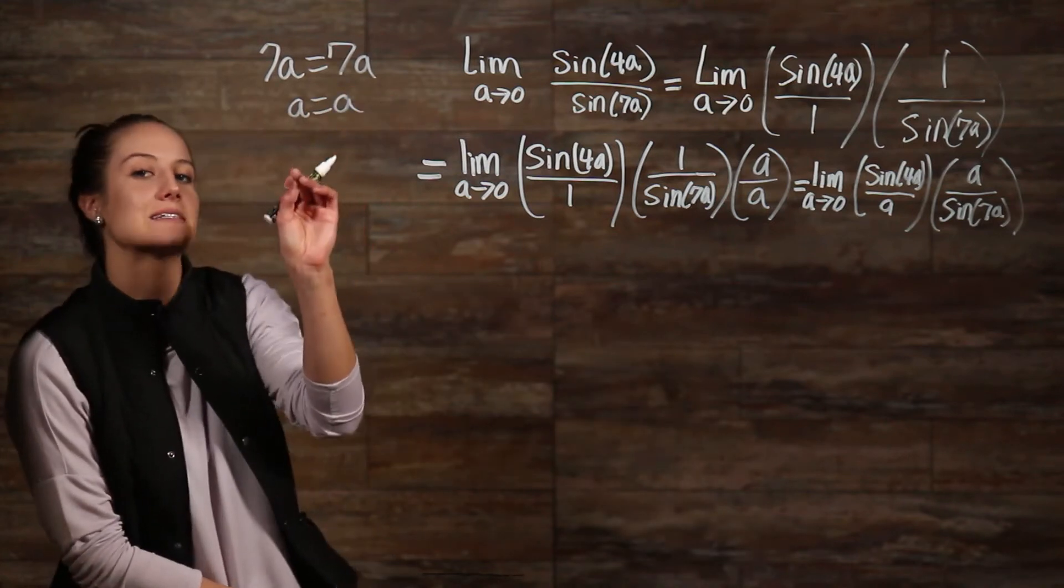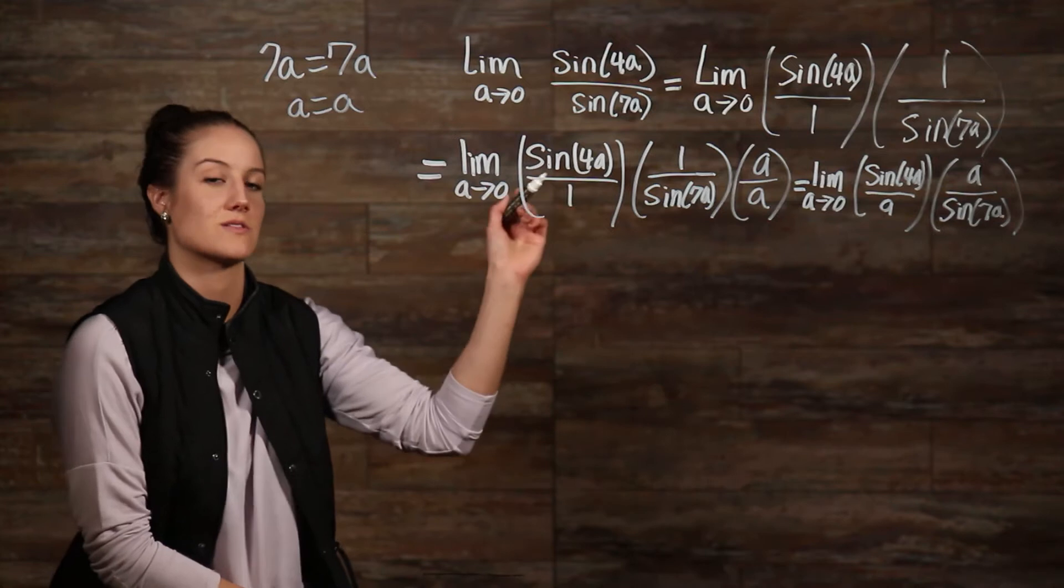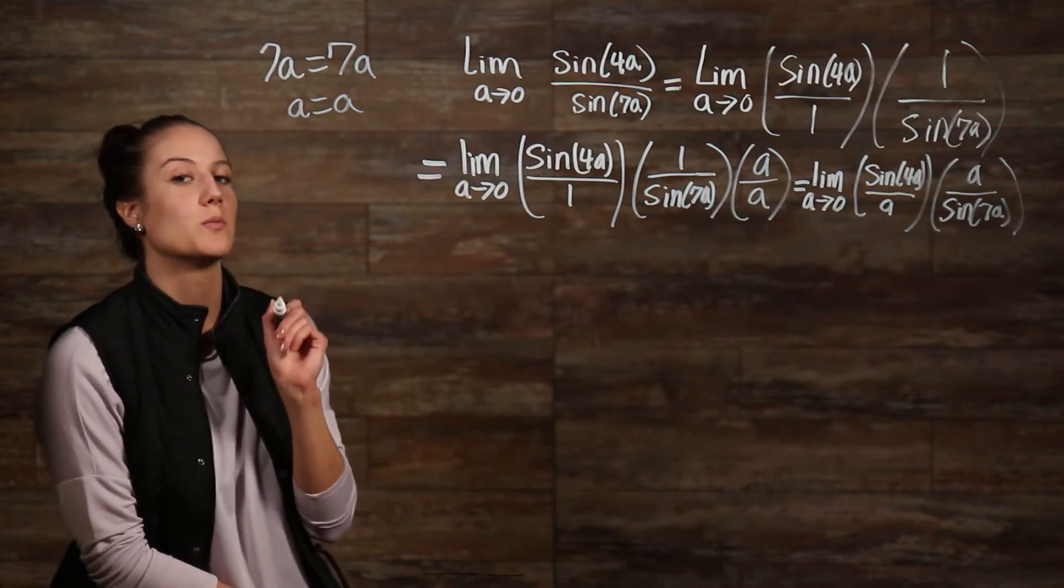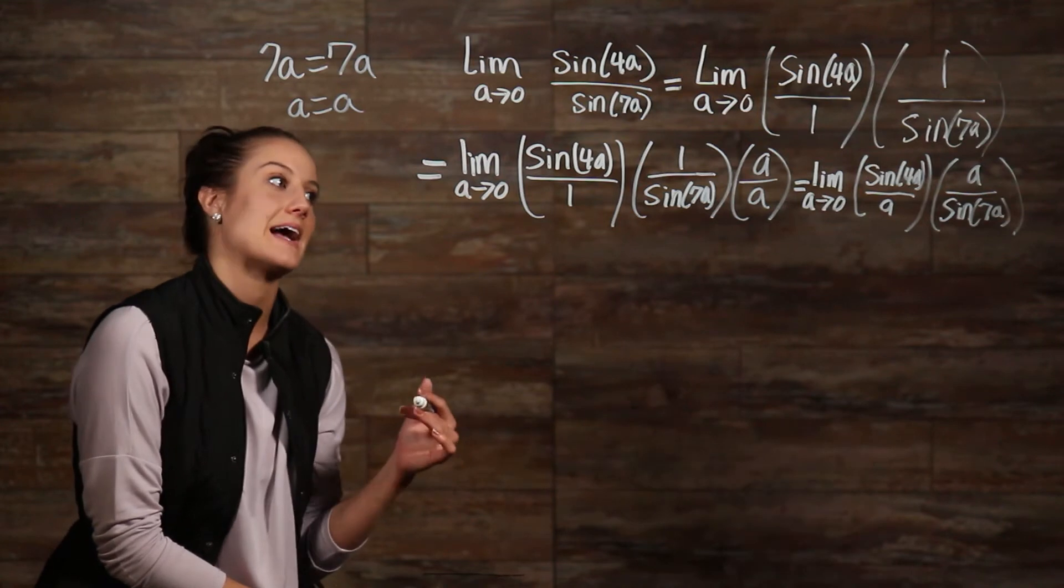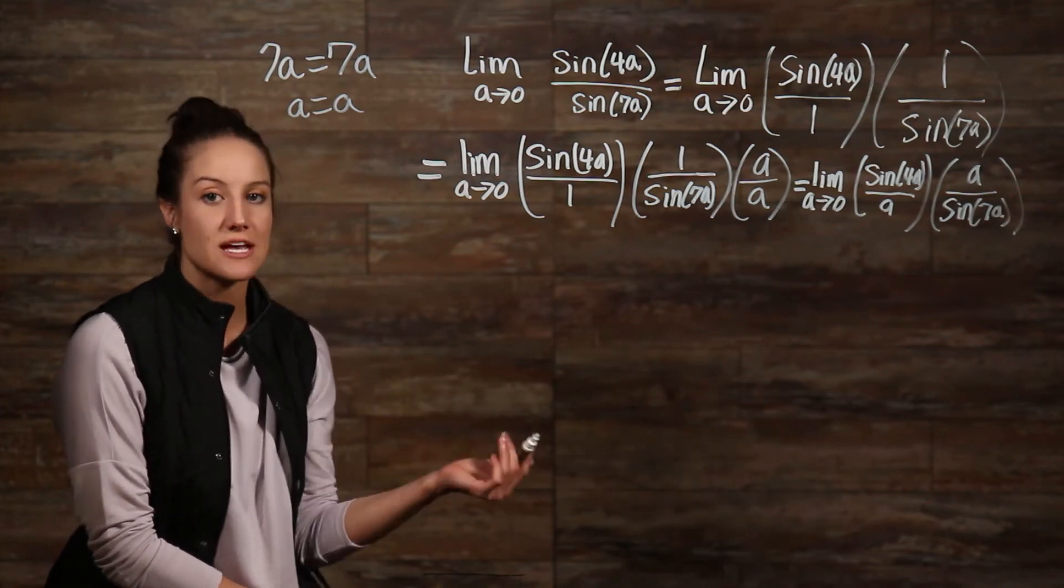Keeping that in mind, to make that happen, we can do pretty much what we just did with our a over a, except we will multiply sin by 4 over 4 and sin by 7 over 7.